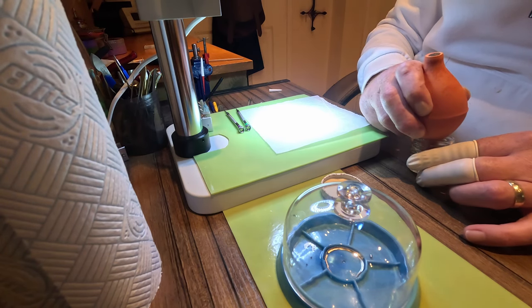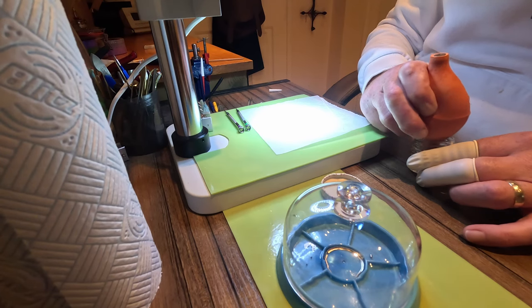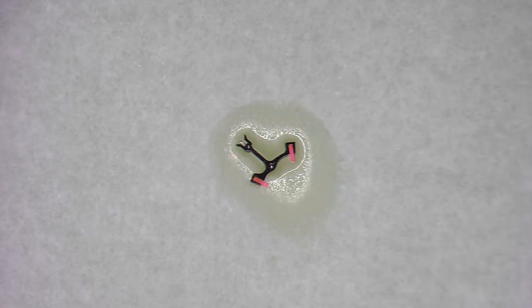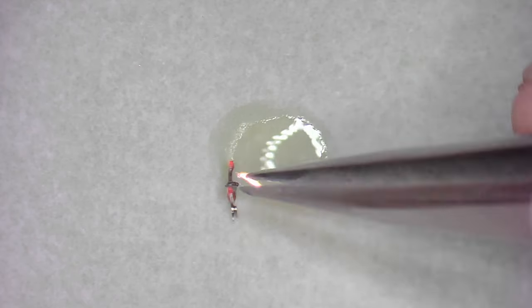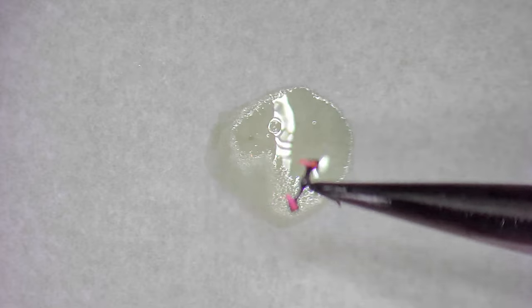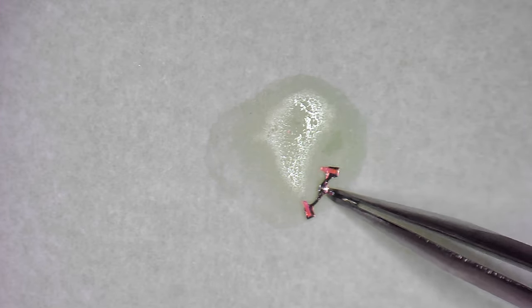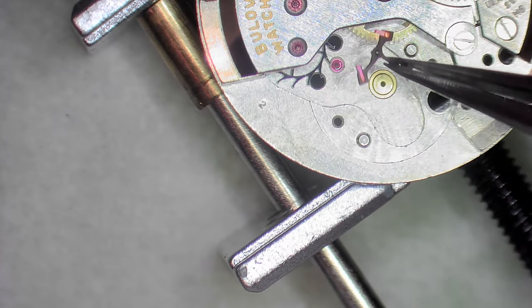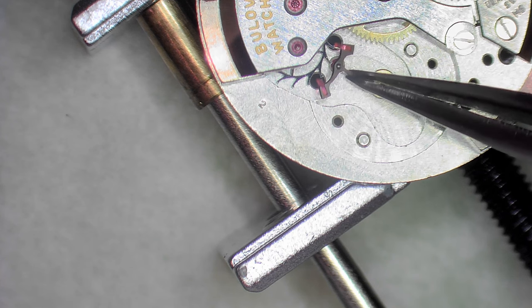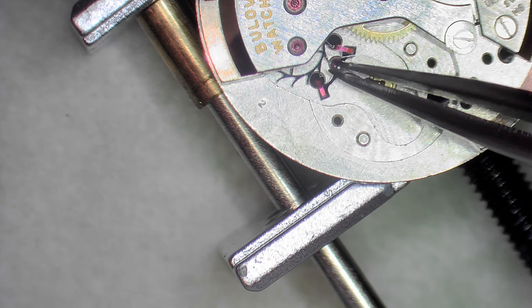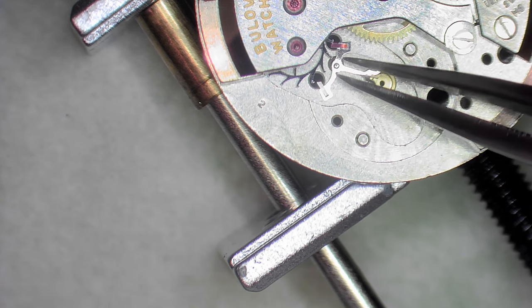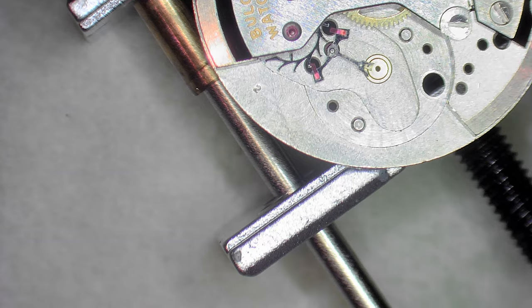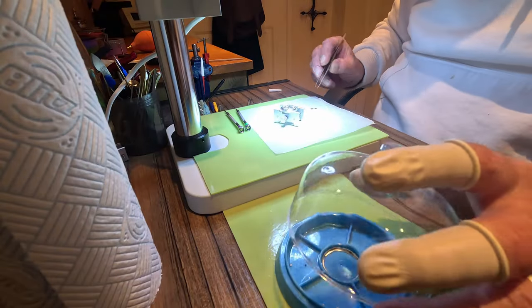I'm doing this, I'm just giving the balance and the cap jewel from the bottom a bit of a clean along with a pallet fork. As you can see that stuff evaporates as you look at it and it's not cheap. I'll get the pallet fork in and then the pallet fork bridge. If it's two screws it's a bridge, if it's one screw it's a cock.